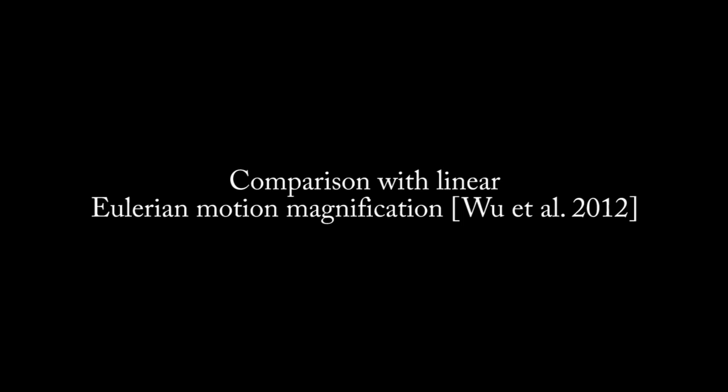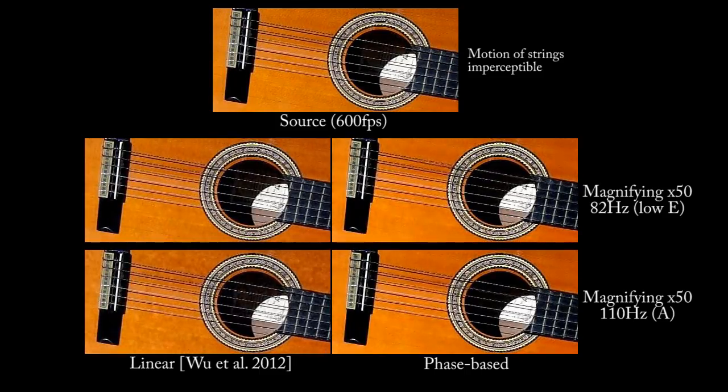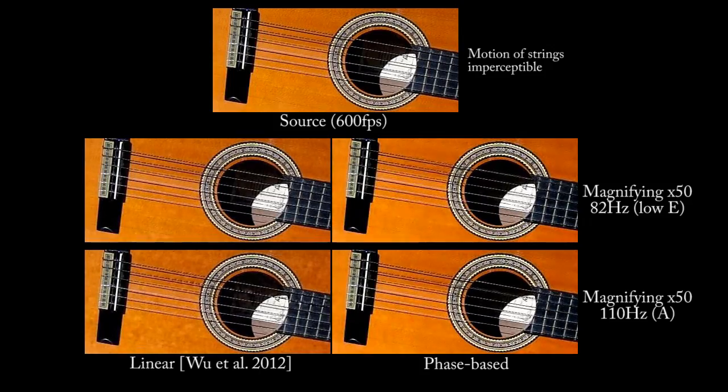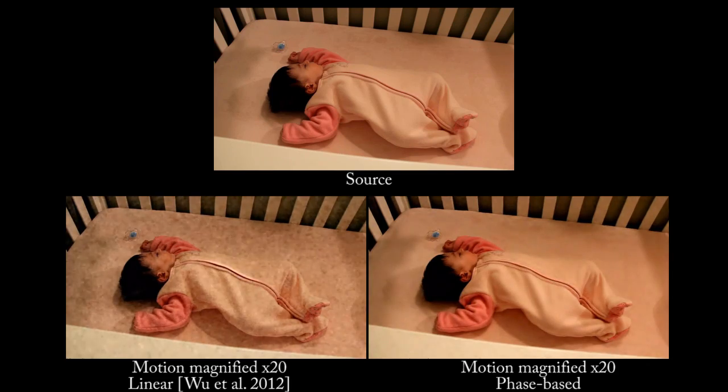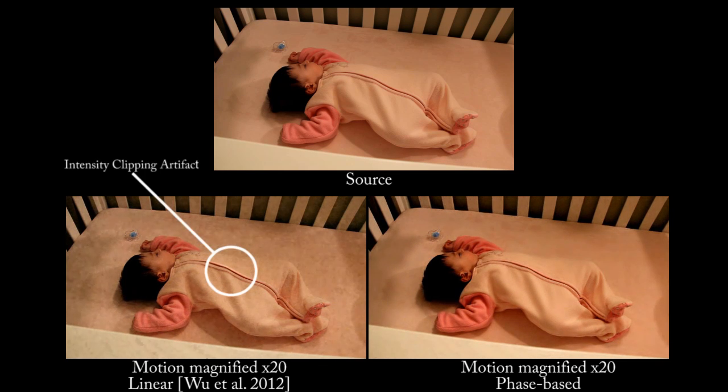Now we compare the phase-based results with linear motion magnification by Wu et al. To illustrate the effect of using phase instead of pixel values, we do not apply spatial smoothing to the phases in these sequences. On all of the videos we have tested, the phase-based method has less noise and fewer artifacts.